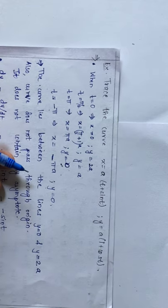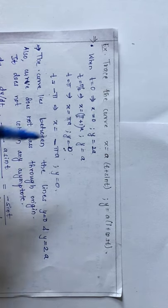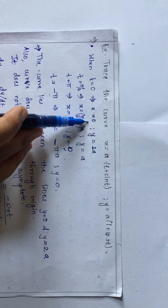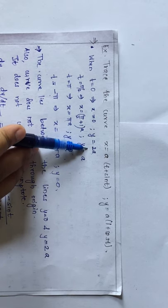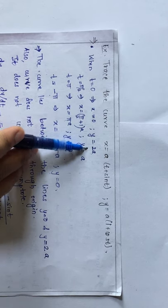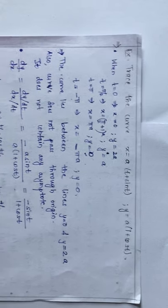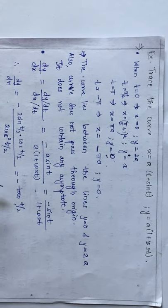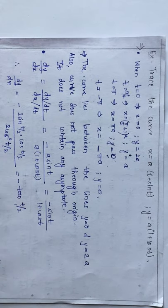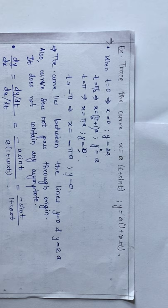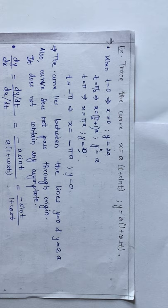When t = 0, x = 0 but y is not equal to 0, so there is no condition where both x and y equal 0. Therefore, the curve does not pass through the origin. Also, there exists no case where as x tends to some value y tends to infinity, or vice versa, so we can say there exists no asymptote.